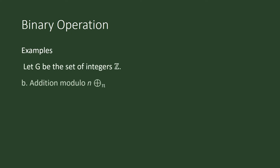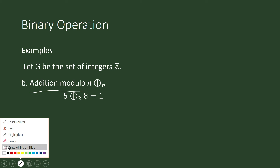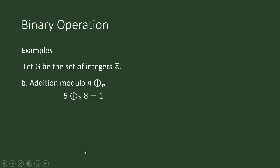Let G be the set of integers. We now consider addition modulo n. Now that you have graduated from high school, it's time to be introduced to new operations. With addition modulo n, we divide the sum by n and look for the remainder. For example, 5 plus 8 addition modulo 2 is equal to 1, because when we divide 13 by 2 the remainder is 1.